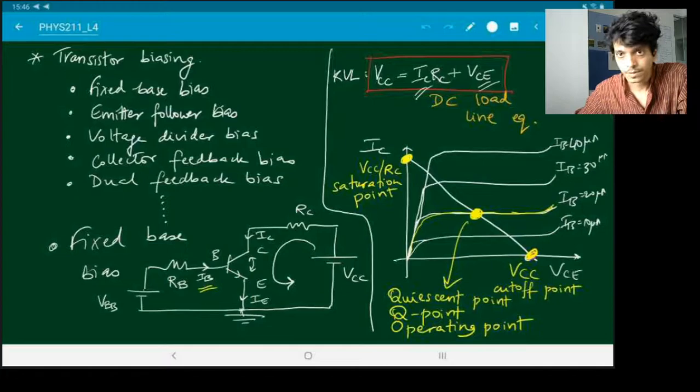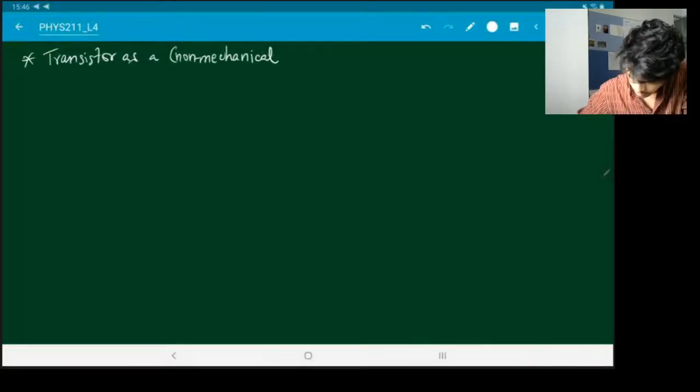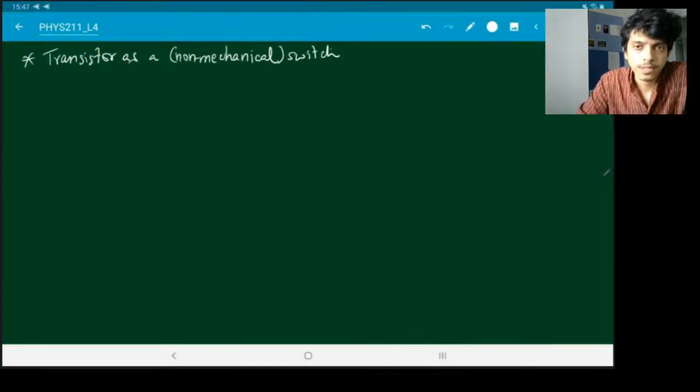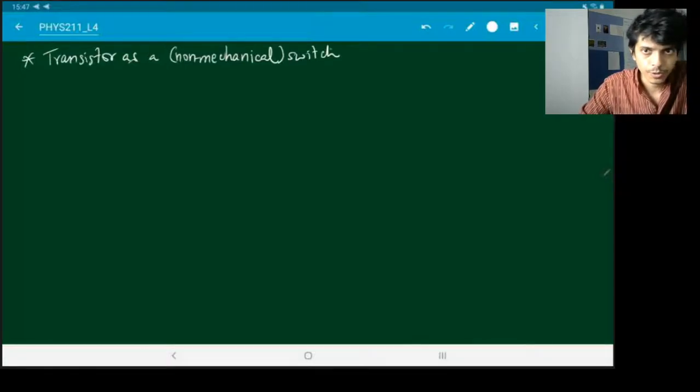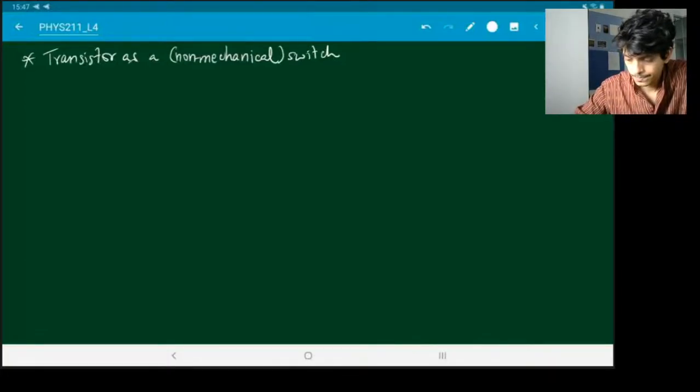One of the applications of transistors is you can use it as a switch, as a non-mechanical switch. What does this mean? Suppose you have a circuit in which, depending on whether you're getting some output or not, you automatically want some other part of the circuit to either turn on or off. That's a non-mechanical switch. You want it to happen automatically within your circuit. So you can use a transistor in that way. Let's see how.